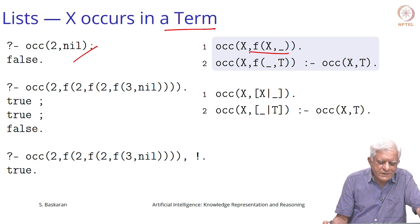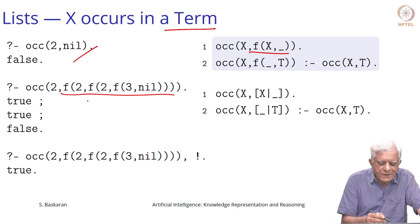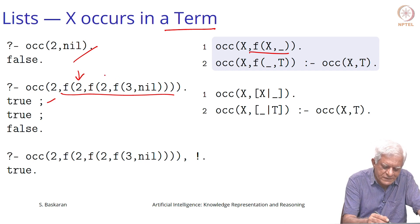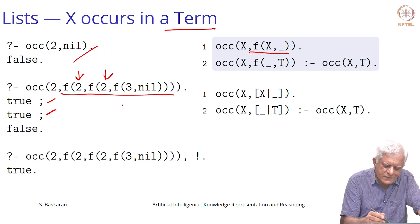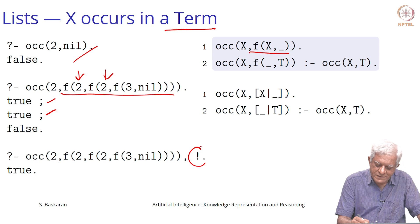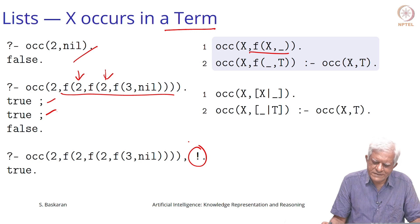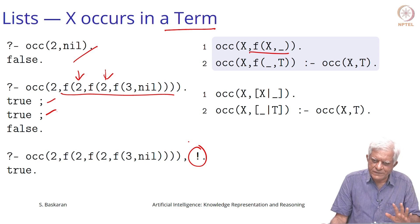Some more examples: 2 does not occur in nil, but if you say 'does 2 occur in f(2, f(2))?', so it is a nested term — it occurs in this place so it says true, it occurs in this place so it says true, then it cannot find any more so it says false. But if you use a cut operator, it will just tell you whether it occurs in the list or term and stops with one answer.